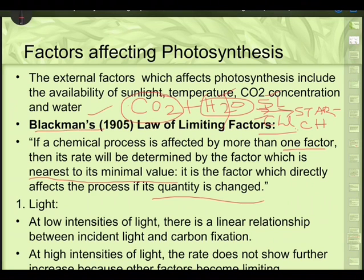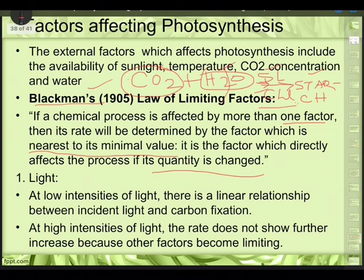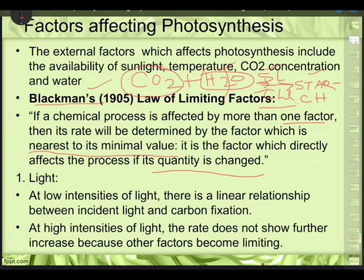We talked about the light harvesting system, PS1 and PS2 — 700 nm and 680 nm absorbed by chlorophyll. So chlorophyll is a must, sunlight must be there, H2O must split in the light reaction, followed by the dark reaction — only then do you get starch. These four factors decide how photosynthesis takes place.